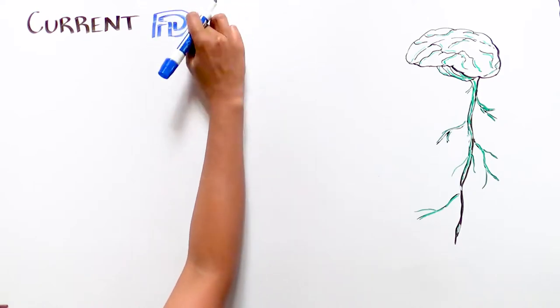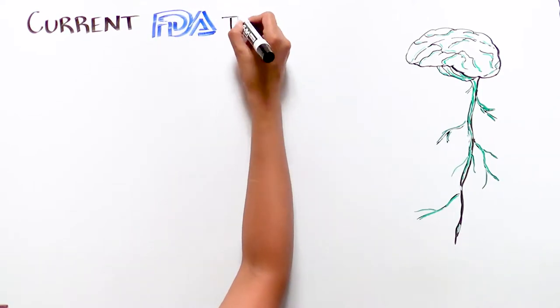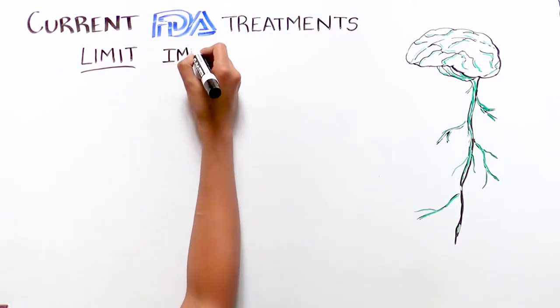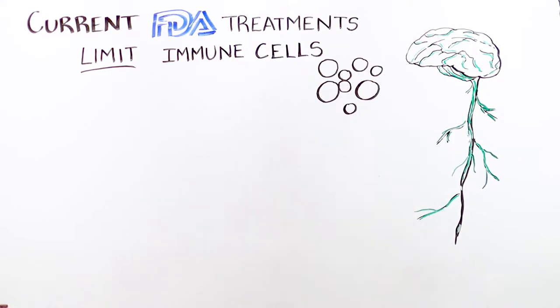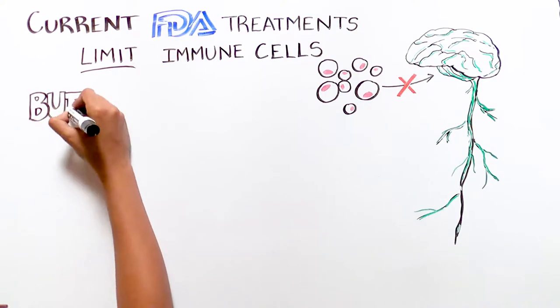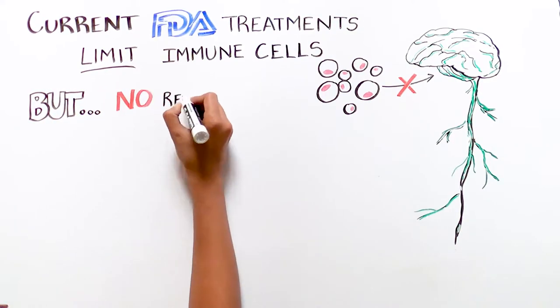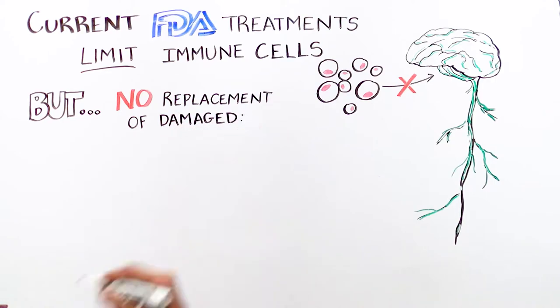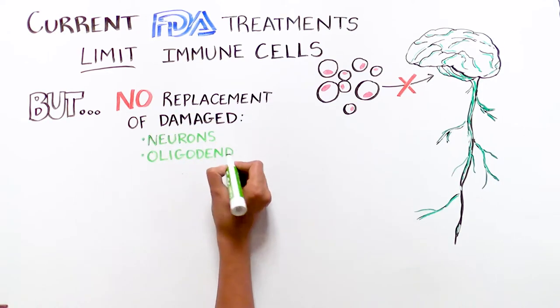All of the current FDA-approved treatments for MS limit the destructive immune cells from entering the brain and spinal cord to try to stop them from damaging myelin. However, these treatments don't do anything to help replace the damaged neurons and oligodendrocytes in these patients.